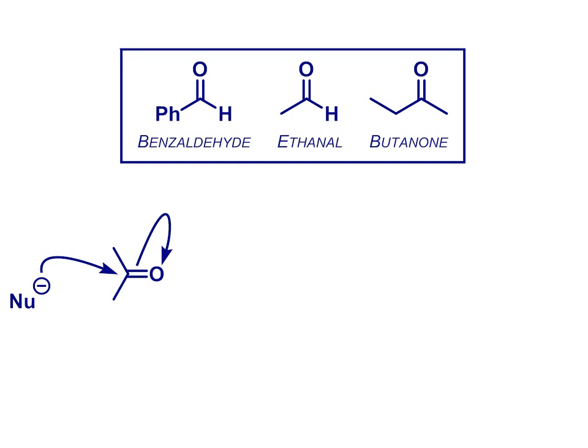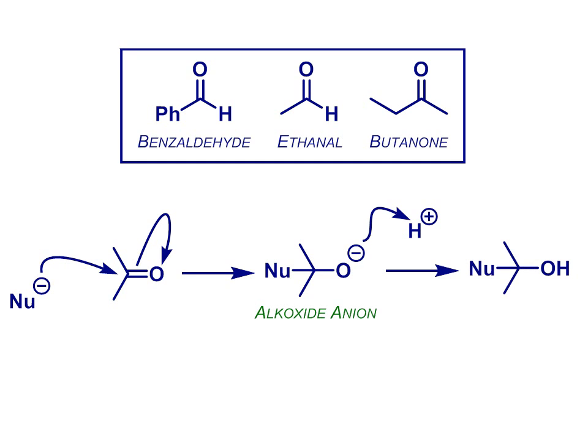The species formed has a negative charge on the oxygen and is called an alkoxide anion. Protonation of the alkoxide is readily achieved in a subsequent step, which is usually aqueous workup—that is, washing with dilute acid solution at the end of the reaction.